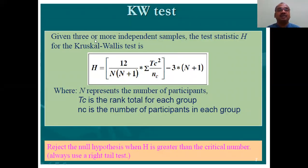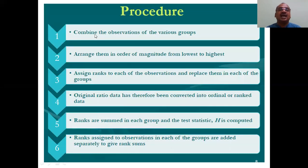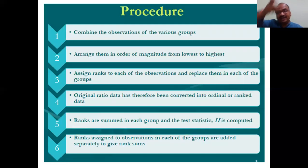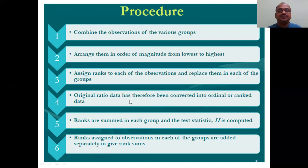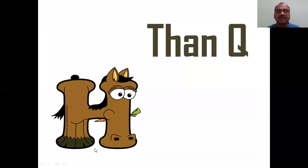This is the standard formula. Given three or more independent samples, use the Kruskal-Wallis H formula. N represents the total number of participants, and small n is the number in each group. Combine the observations of all groups, arrange them in order of magnitude from lowest to highest, assign the rank to each observation, and replace them in each group. Original ratio data has been converted into ranks. Ranks are summed — R1, R2, R3 for each group — and H is computed.